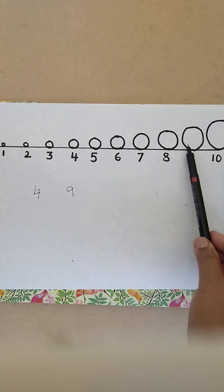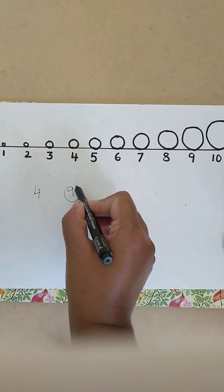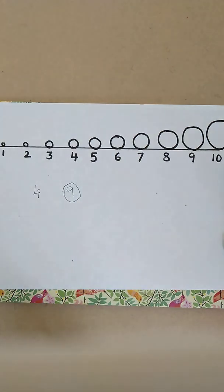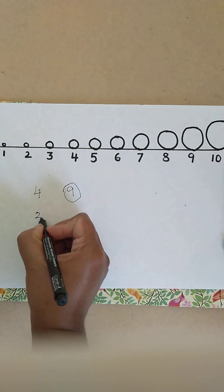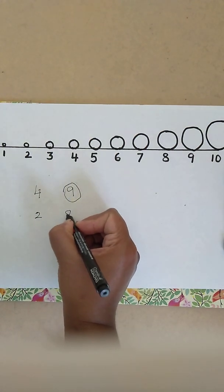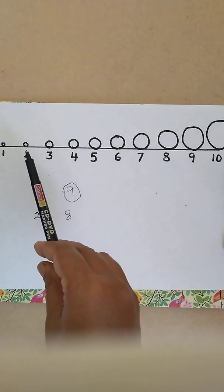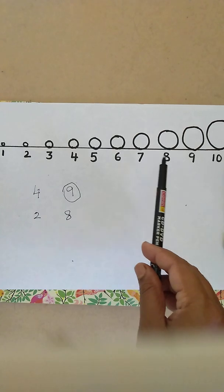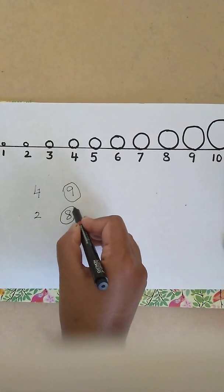Similarly, you can give him more numbers. Maybe we can give 2 and 8. Now among 2 and 8, which is the bigger number? Ask the child to look at the number line: 2, 8. Which has the biggest circle? 8, right?